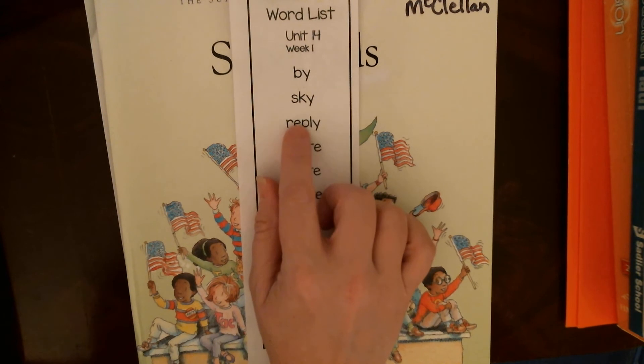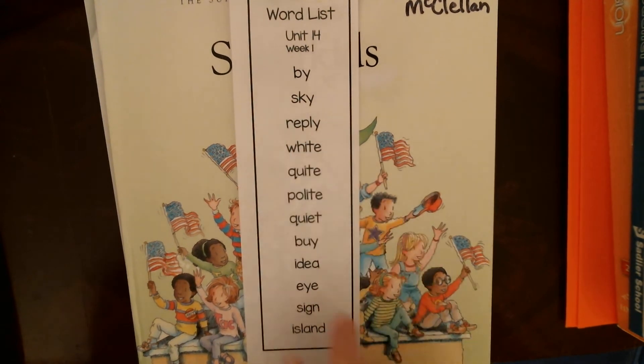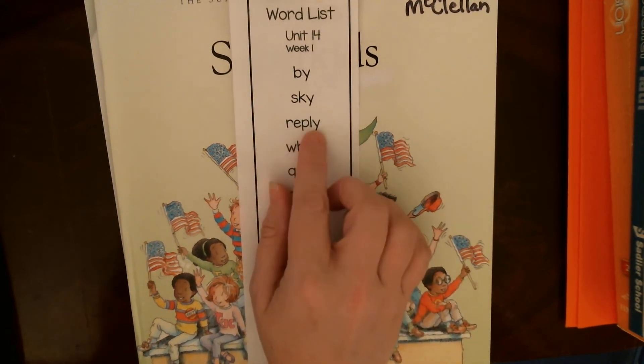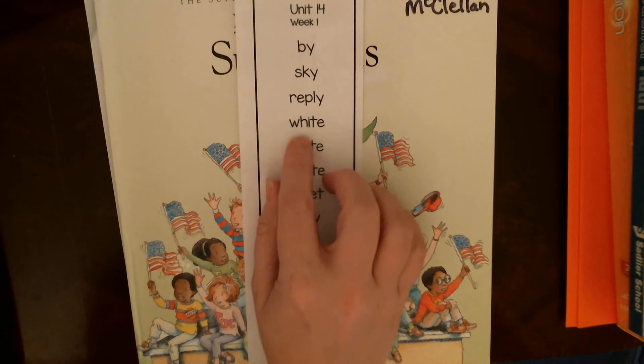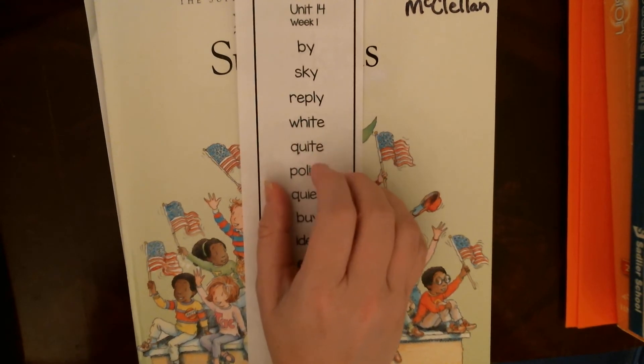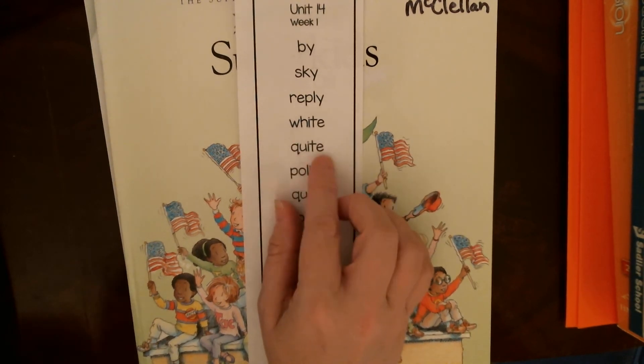It's usually when it's just that one syllable, but sometimes a lot of these are going to be rule breakers this week. This is reply. So when I ask you a question, you will reply back to me. Then we have our I consonant E rule. White, like the color white. It's got that W sound.